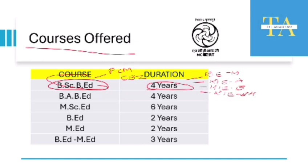There is one more course known as BA BEd. BSc BEd is Bachelor's in Science and Education; BA BEd is Bachelor's of Arts and Bachelor's of Education. This program is also a four-year program, and similar to the previous one, this course is also offered by the four RIEs.